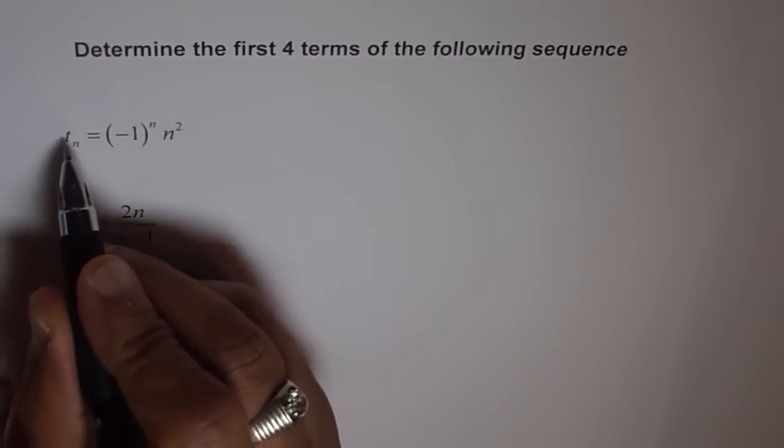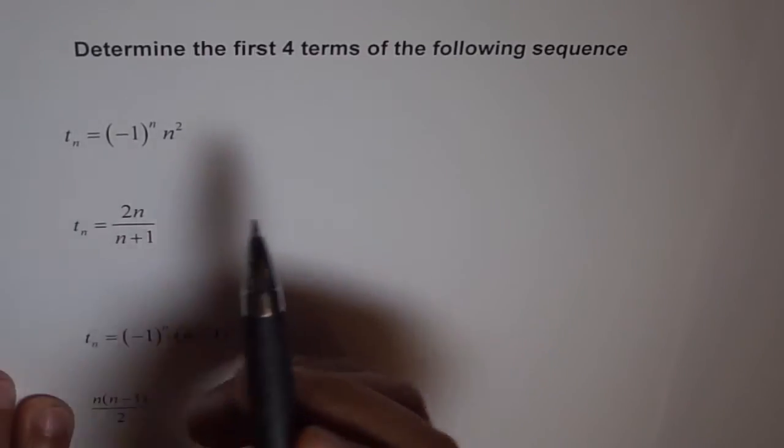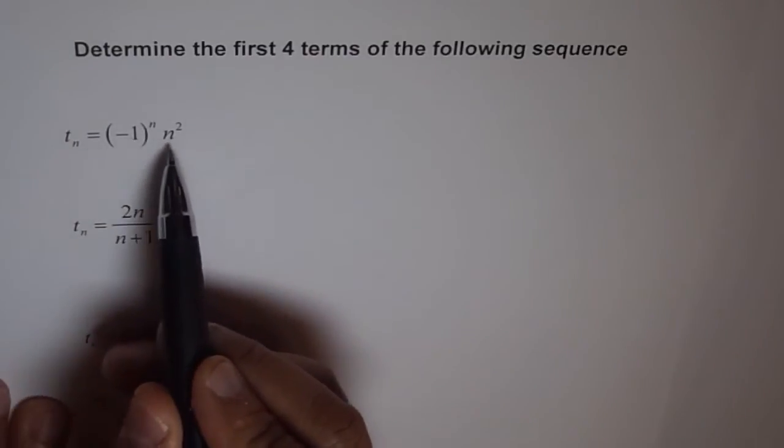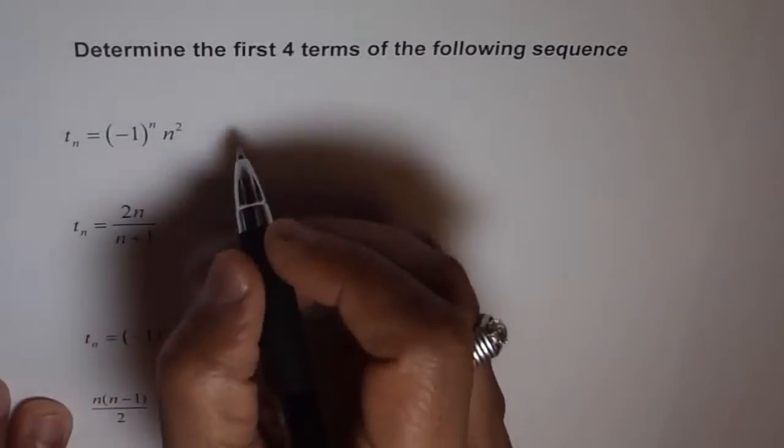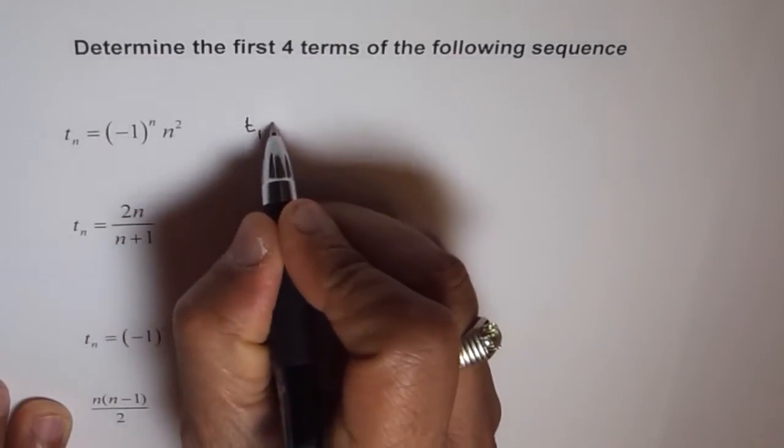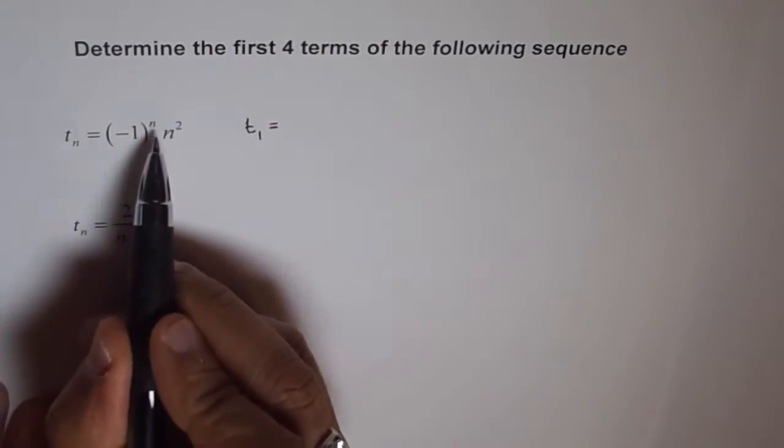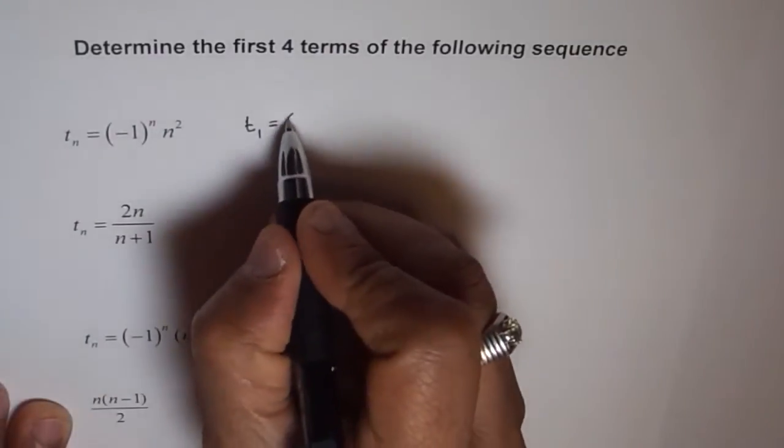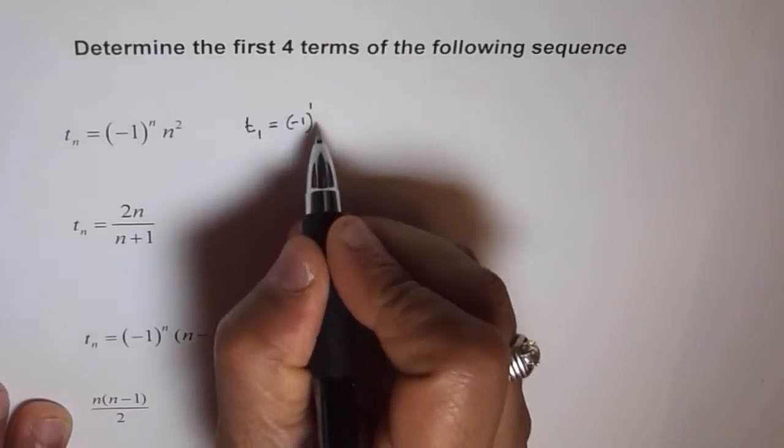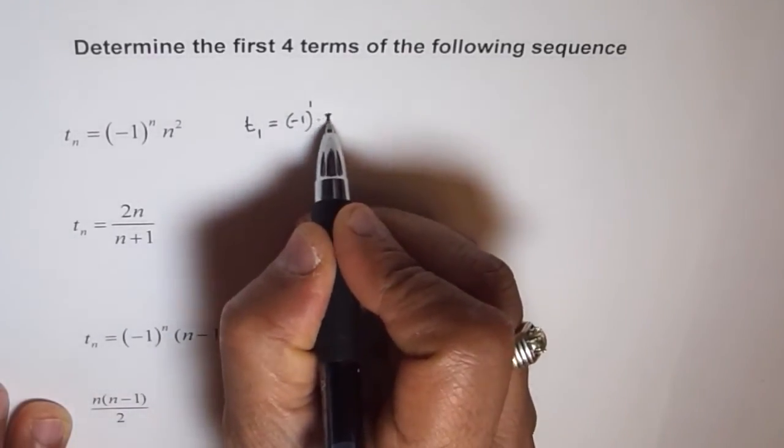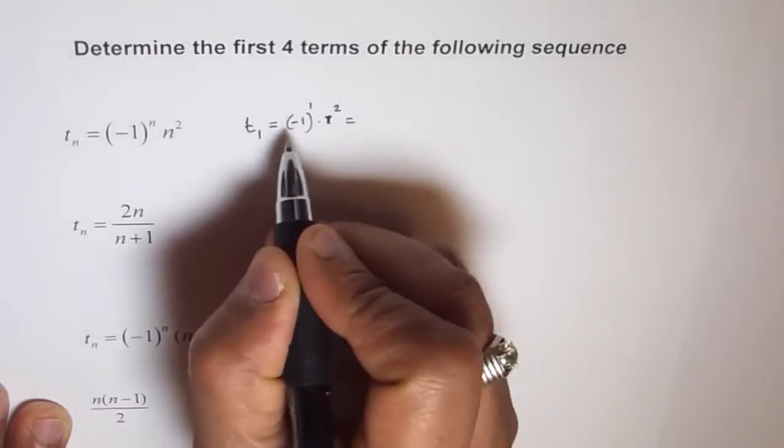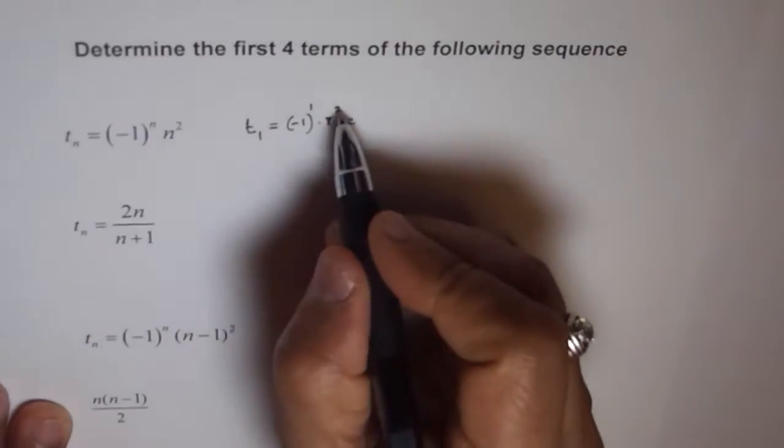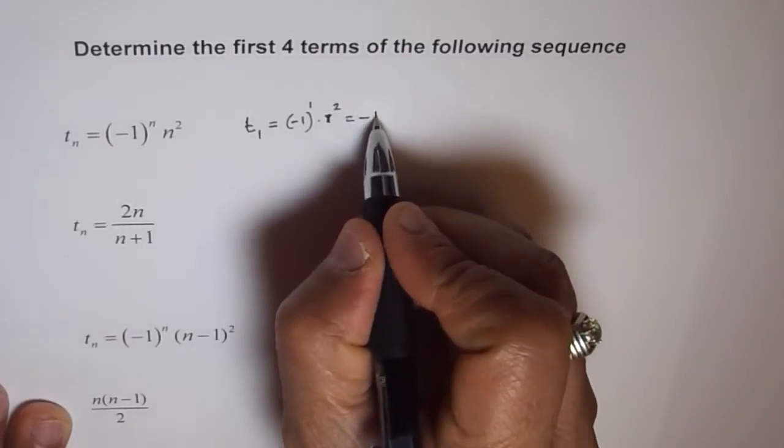tn equals to minus 1 to the power of n times n square. So, what is t1 equals to? We'll just replace n with 1 and find out the value. So, t1 equals to minus 1 to the power of 1 times 1 square, which is minus 1 to the power of 1 is minus, and 1 square is 1, so the first term is minus 1.